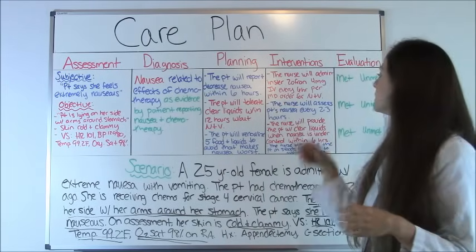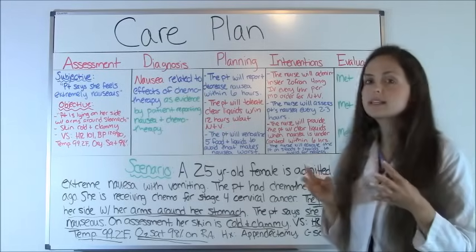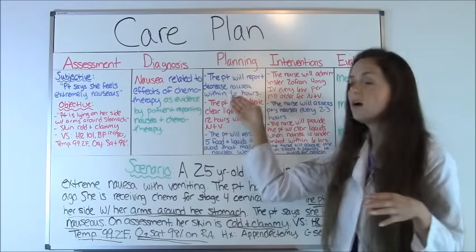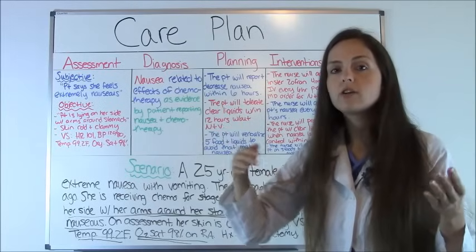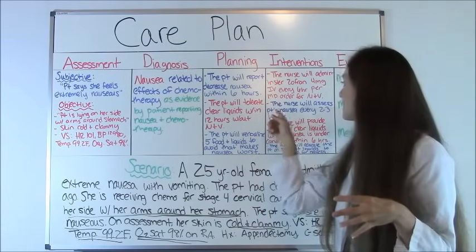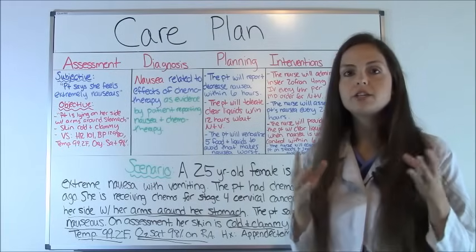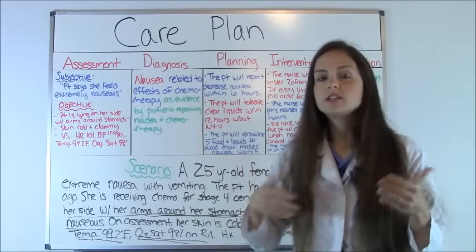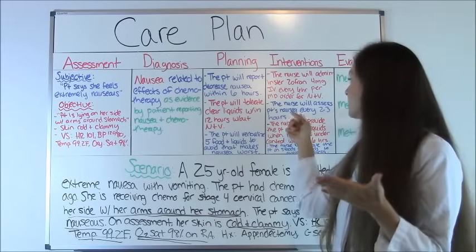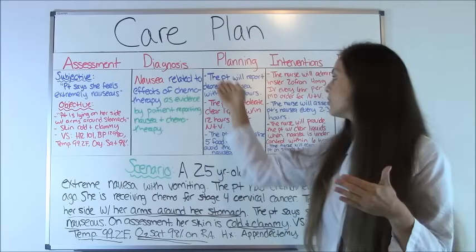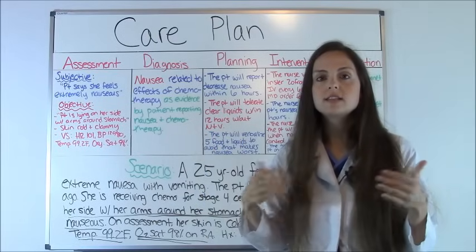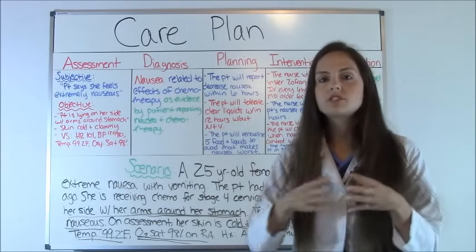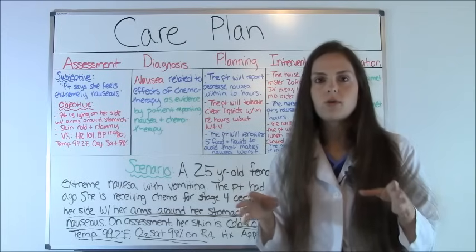First intervention: the nurse will administer Zofran 4 milligrams IV every six hours per MD order as needed for nausea. This will help our goal of decreasing the patient's nausea. Second intervention: the nurse will assess the patient's nausea every two to three hours. This is very important — you have to document how the patient is experiencing nausea. If you can never think of a nursing intervention, assessing for something every so many hours is always a safe choice.